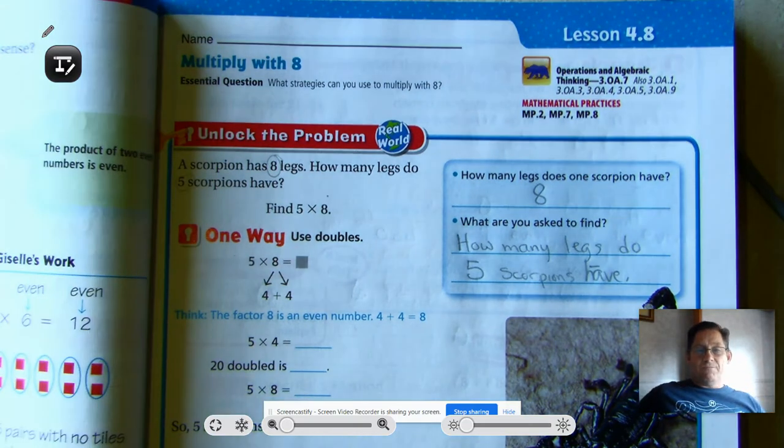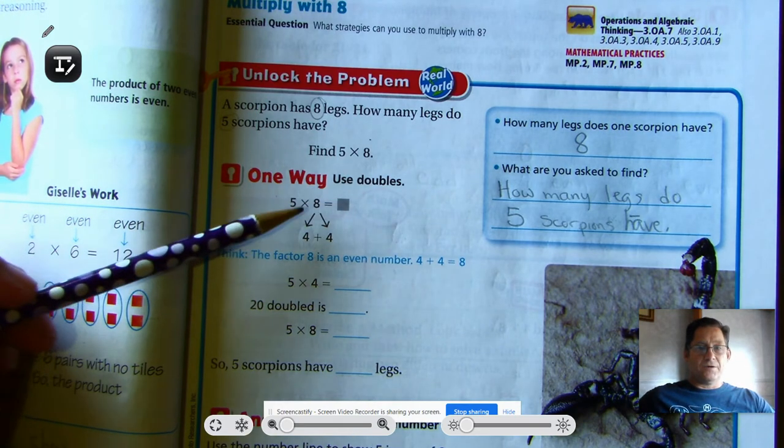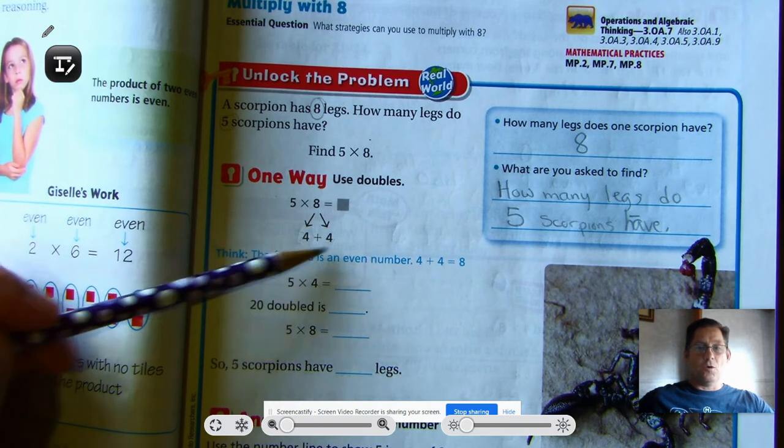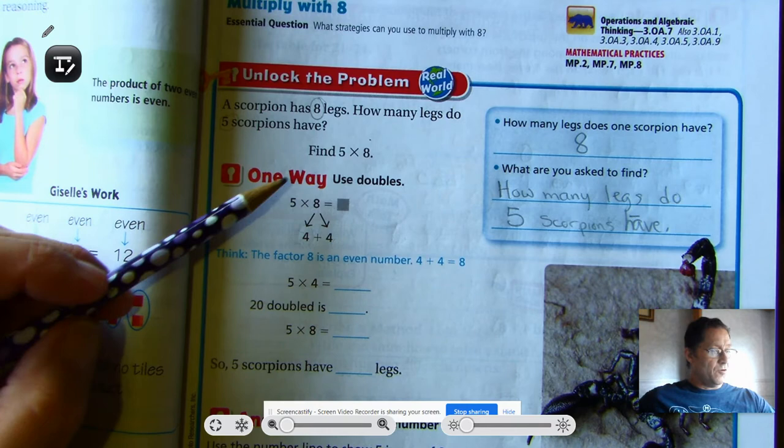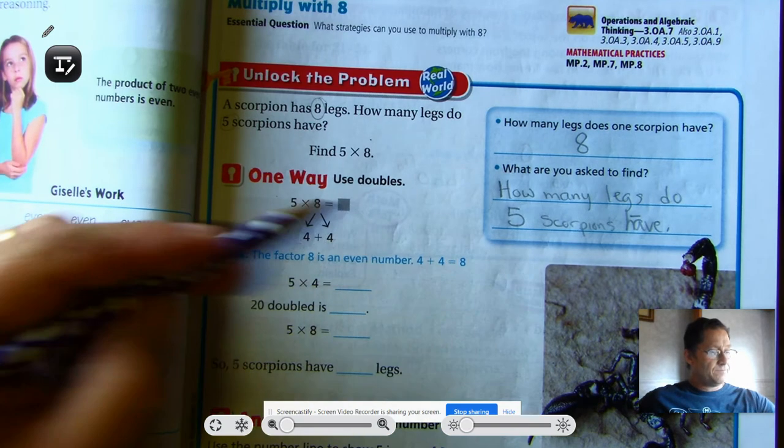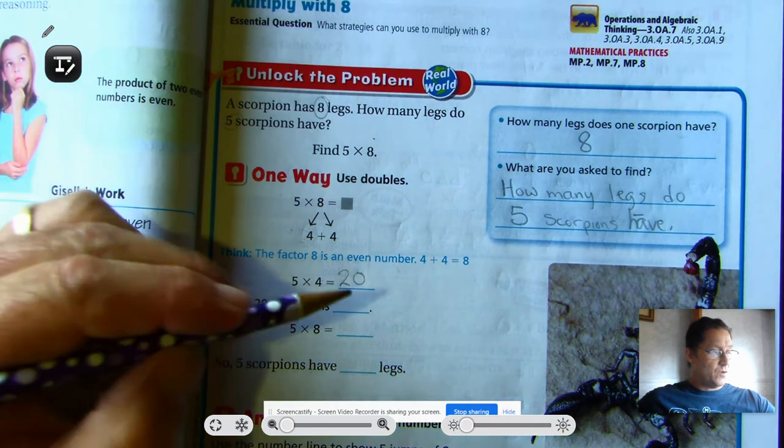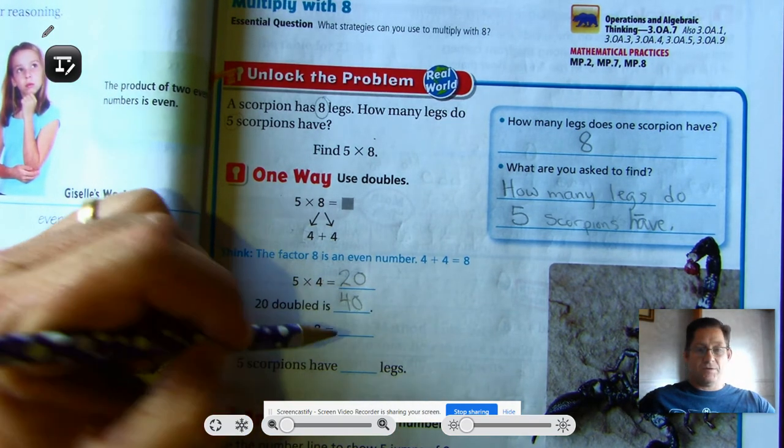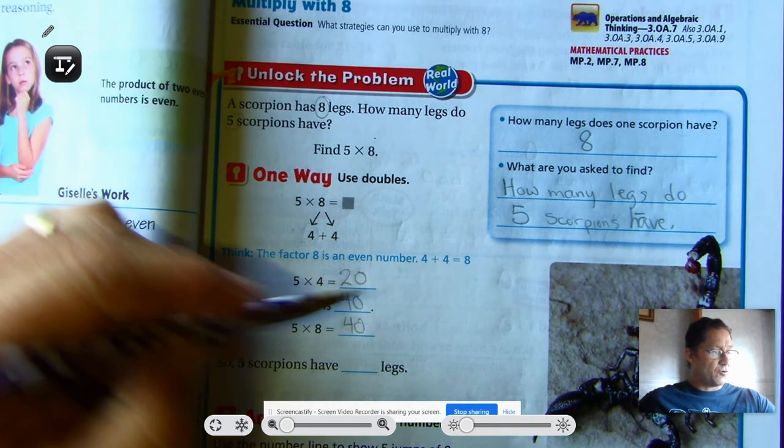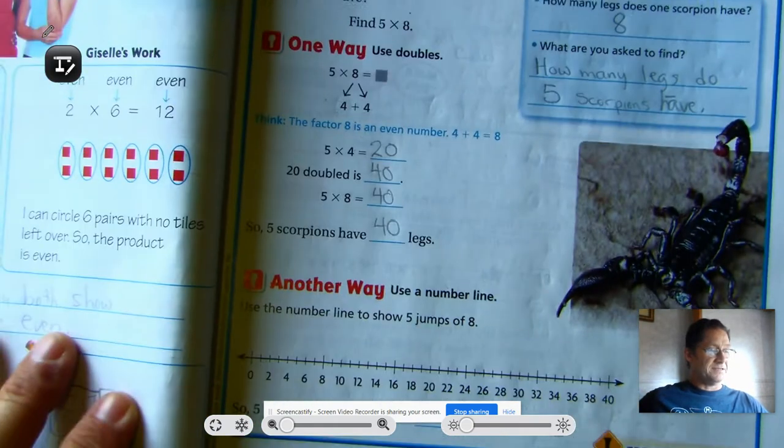So, one way we can multiply by 8 is to use the concept of doubles. Because 8 is an even number, I can split it into two sets of 4. 4 plus 4. So 5 times 8 is the same as 5 times 4, doubles. 5 times 4 is 20. 20 doubled is 40. 20 plus 20 is 40. So 5 times 8 is 40. So 5 scorpions have 40 legs. That seems easy enough.